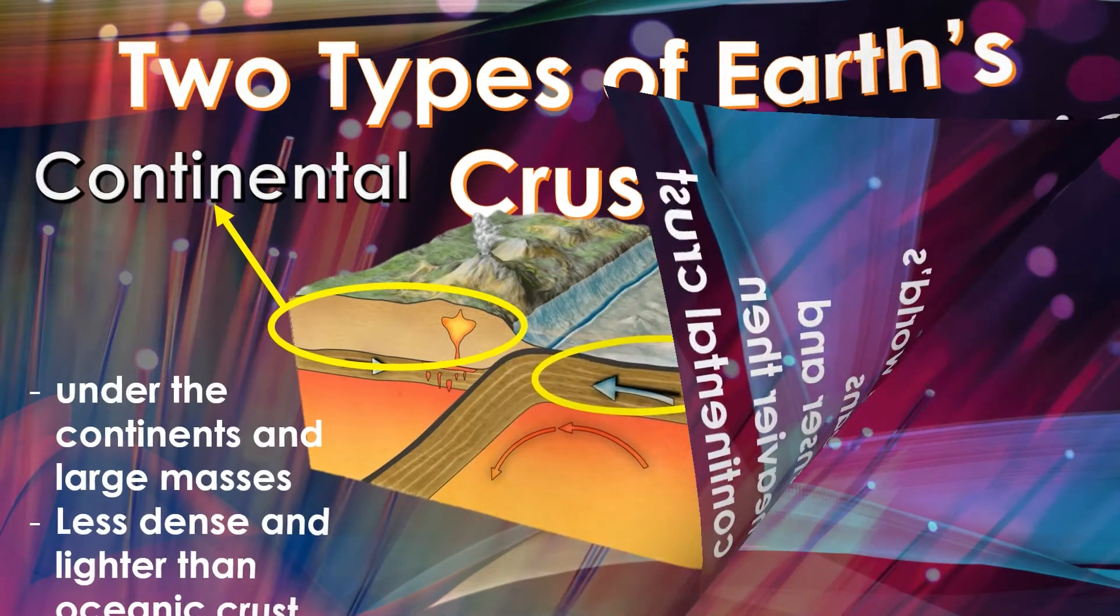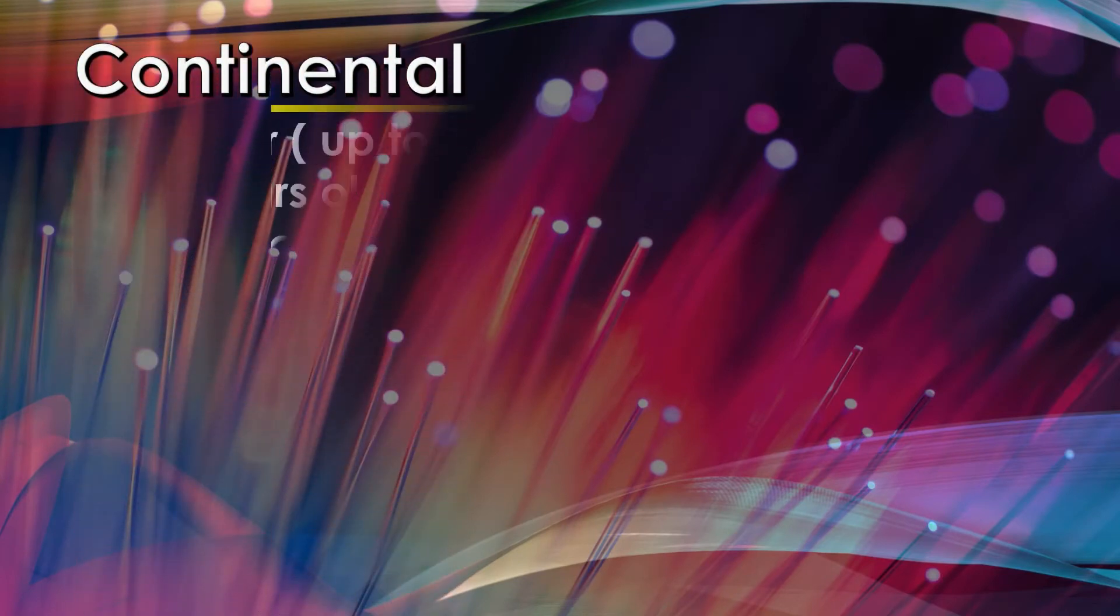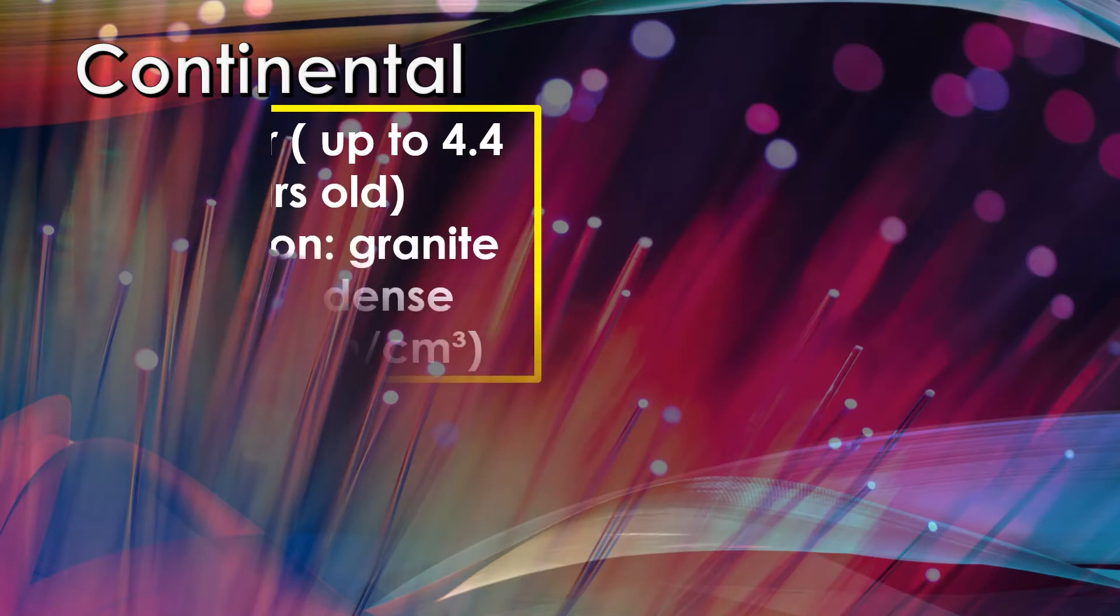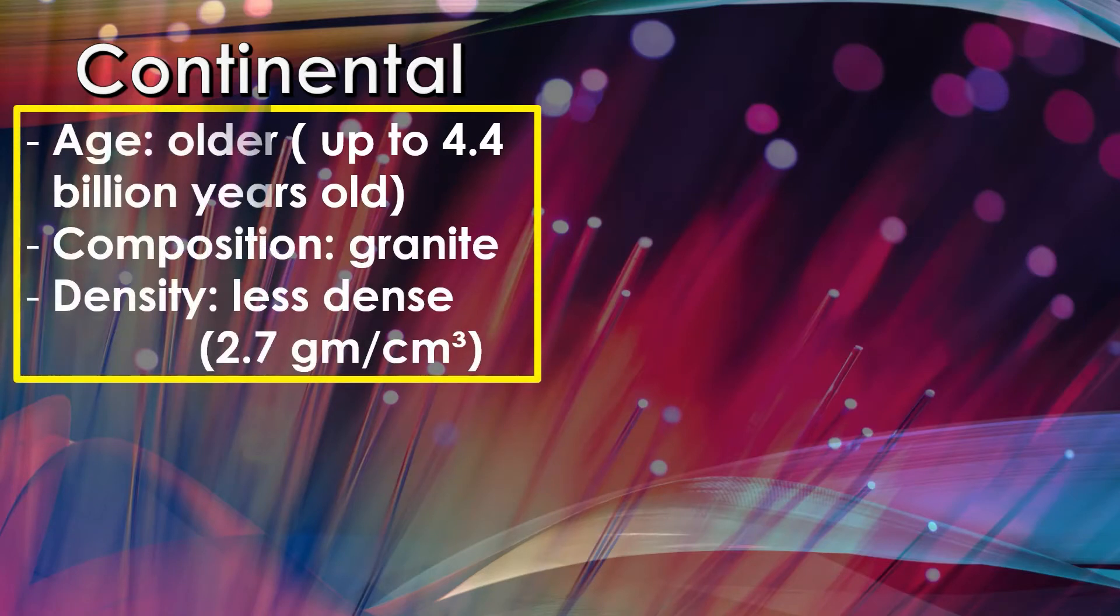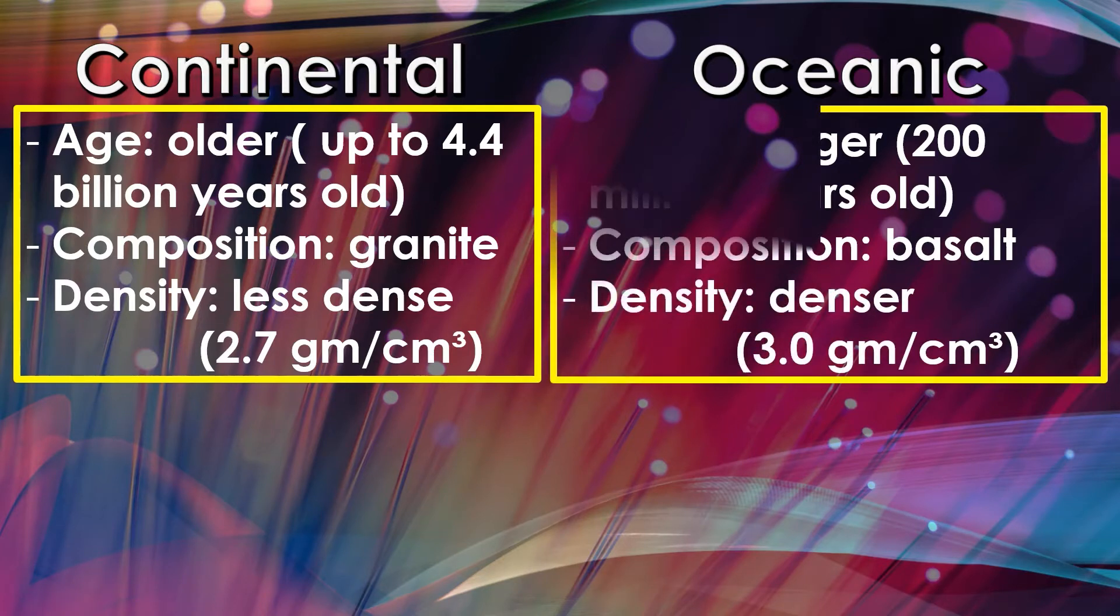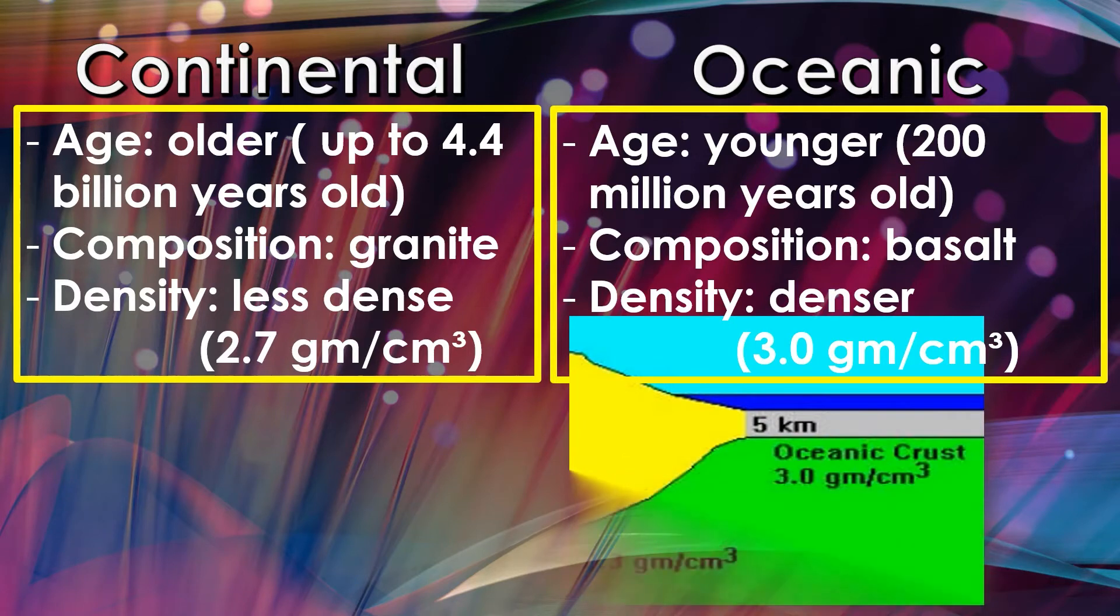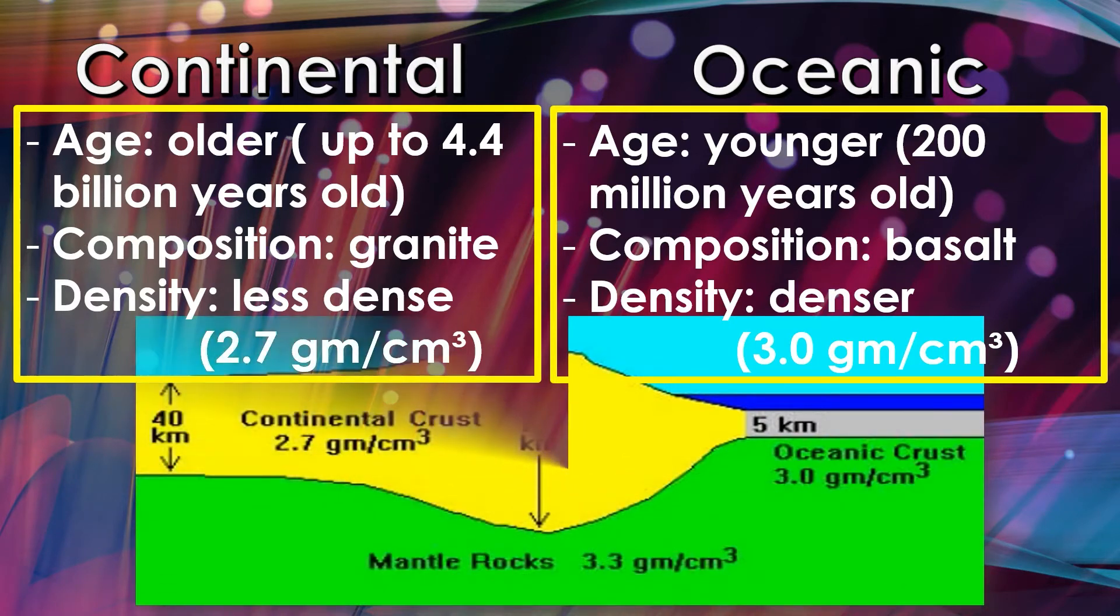Let us compare the characteristics and components of the crust. Continental is said to be older, about 4.4 billion years old, composed of granite, which makes it less dense at about 2.7 grams per cubic centimeter. While oceanic is said to be younger, about 200 million years old, composed of basalt, which makes it denser at 3.0 grams per cubic centimeter.